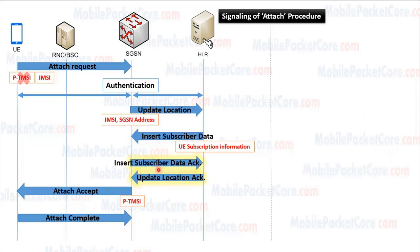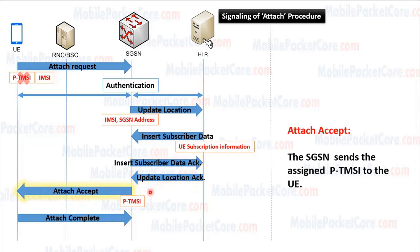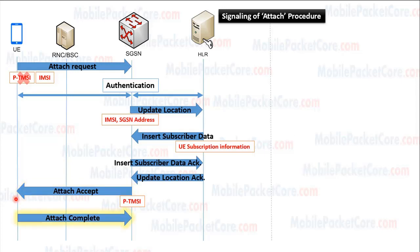Then the SGSN replies to the HLR by sending an insert subscriber data acknowledge. And the HLR replies to the SGSN by sending an update location acknowledge. After that, the SGSN assigns a PTEMC for the UE and sends an attach accept to the UE, including the PTEMC assigned to it. Finally, the UE stores this PTEMC in its MM context and replies with attach complete.